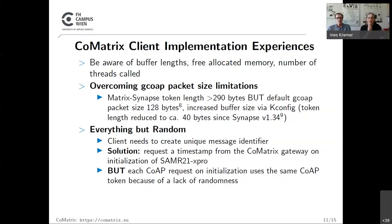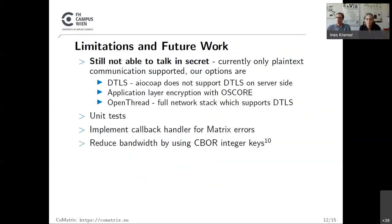Another challenge was the lack of randomness on microcontrollers. For sending a message to a room, a client needs to create a unique message identifier. Our solution was to ask the gateway for a timestamp and use that as the message identifier, which worked. However, the CoAP request also needs a unique token — if not, the gateway sends back the same cached response, recognizing it as a duplicate packet. We haven't found a solution for this yet; our current workaround is to reset the gateway.